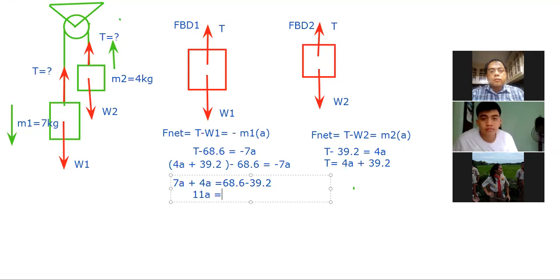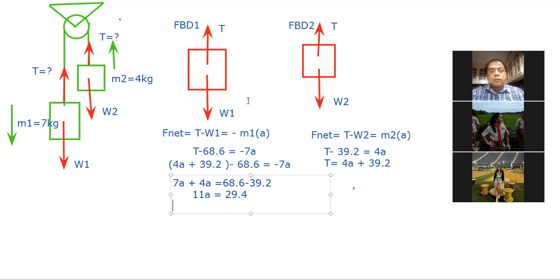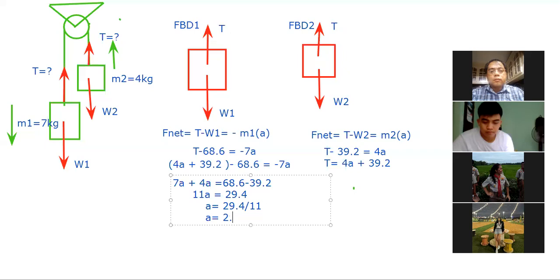Okay, so what is now our value? We will have 11A equals to how much is the difference? 29.4, sir. Okay, so what will we do to get A? Of course we will divide. A is 29.4 divided by 11, and our A value is equivalent to 2.67 meter per second squared.